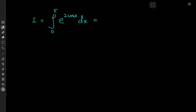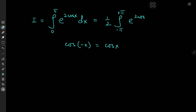So how exactly are we supposed to approach this thing? Well, first up, notice that we have cosine x, and we know that cosine x is an even function of x, so cosine of negative x equals cosine x. That means we can write this integral as one half the integral from negative pi to positive pi of e to the two times cosine x dx.